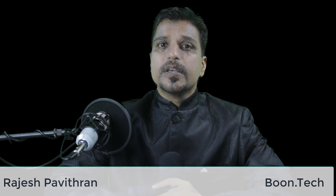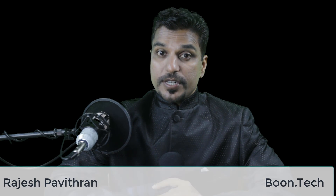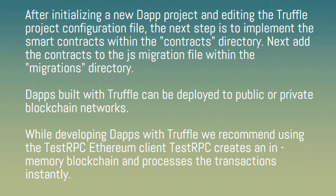Building a DApp involves the following steps: implement smart contracts in a high-level language such as Solidity, compile the contracts with language-specific compilers such as solc to get the contract binary. After initializing a new DApp project and editing the Truffle project configuration file, the next step is to implement the smart contracts within the contracts directory. Next, add the contracts to the JS migration file within the migration directory.